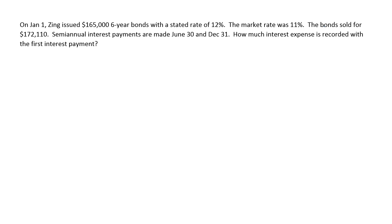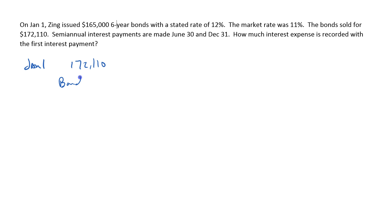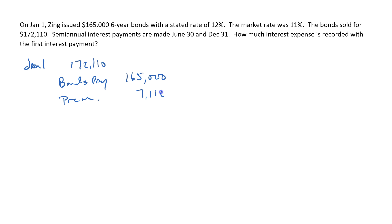The first thing I'm going to do — and it doesn't ask for this — but I'm going to write the journal entry of issuing the bonds. On January 1, it tells us that we sold the bonds for 172,110, and we credit bonds payable for the face value of the bonds, 165,000. In this case, we sold them for a premium, so we credit premium for the difference between the two, which is 7,110.